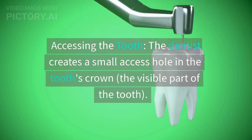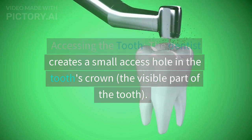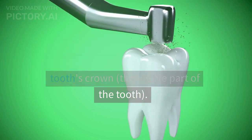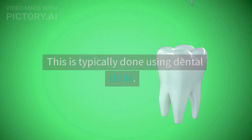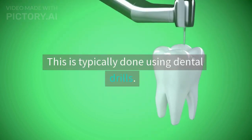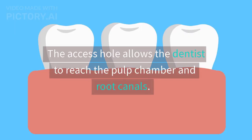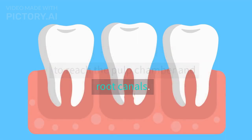Accessing the tooth. The dentist creates a small access hole in the tooth's crown, the visible part of the tooth. This is typically done using dental drills. The access hole allows the dentist to reach the pulp chamber and root canals.